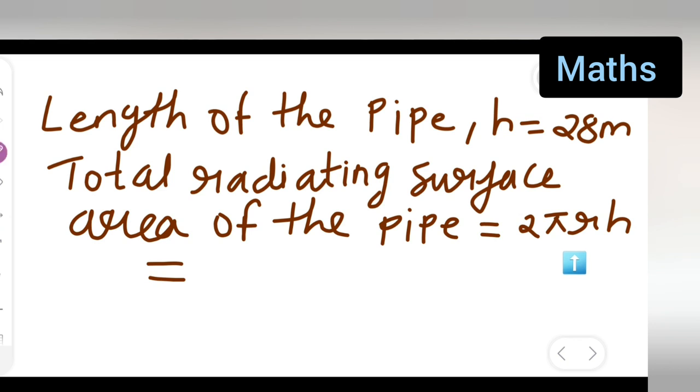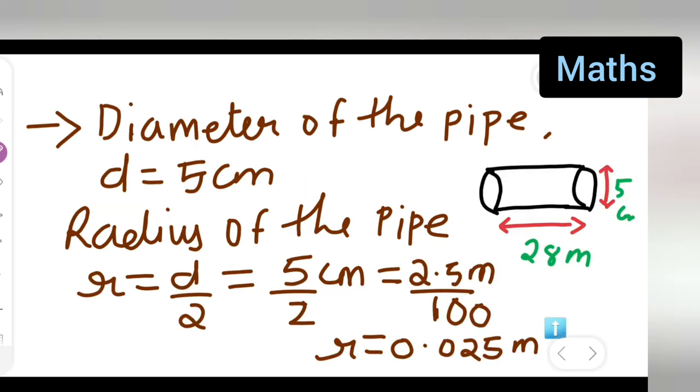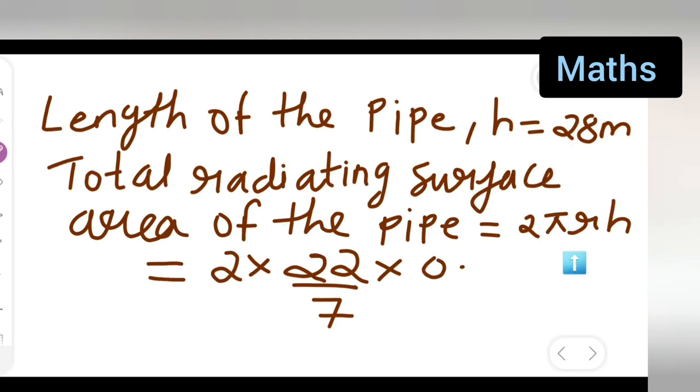It is multiplied by 2, the value of π is 22/7, the radius is 0.025, multiplied by 28 which is your height.